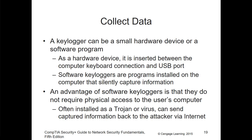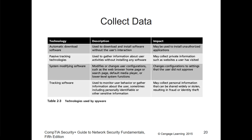Keyloggers can be hardware, software, or a USB dongle — they can be many things. An advantage of software keyloggers is that you don't need physical access; you can install the code and have it report back. Depending on what you're dealing with, it could be automatic download, passive, active, or tracking software. Passive tracking technology can passively collect private information, and system modification could modify the system in undesirable ways.